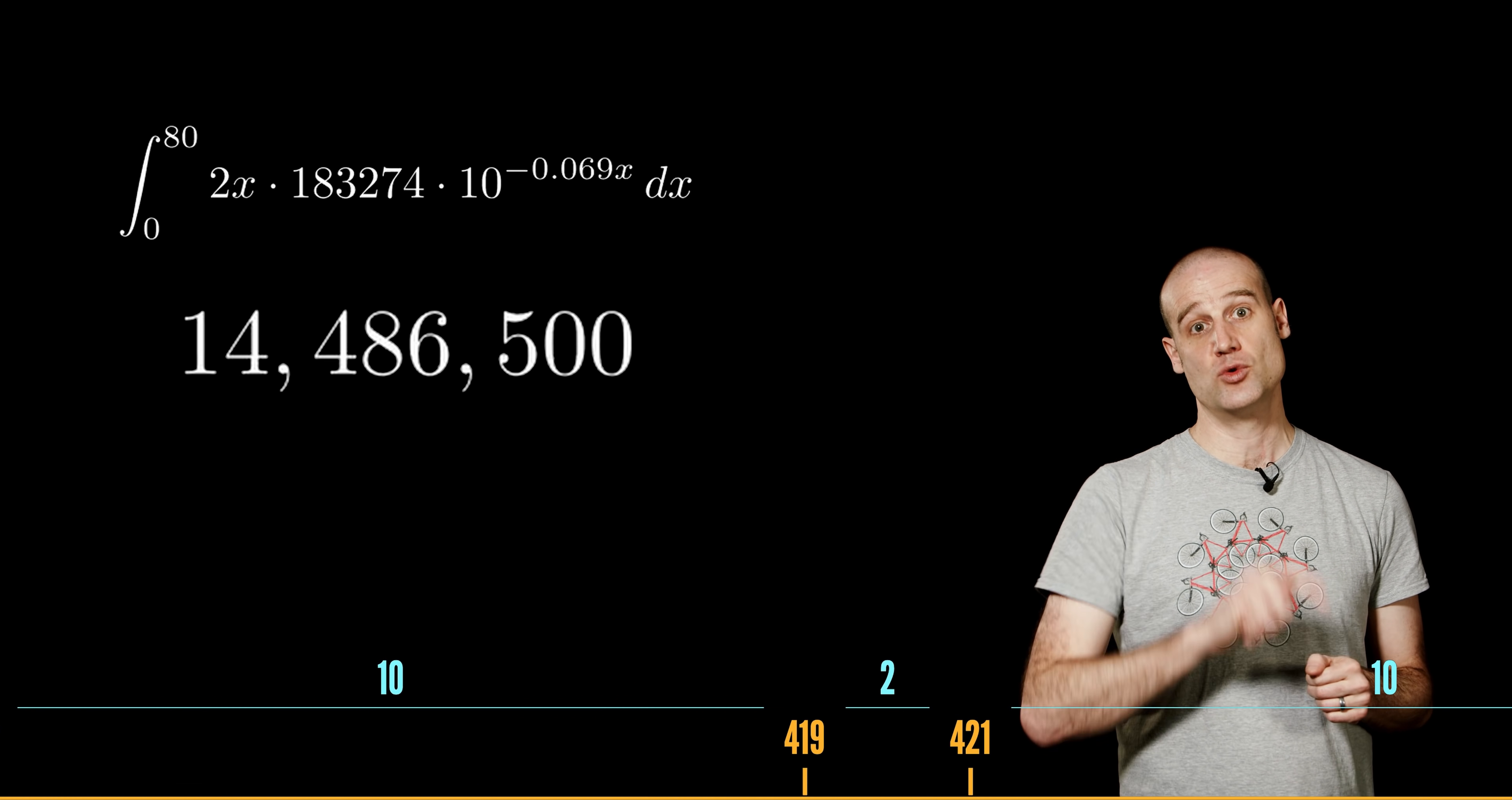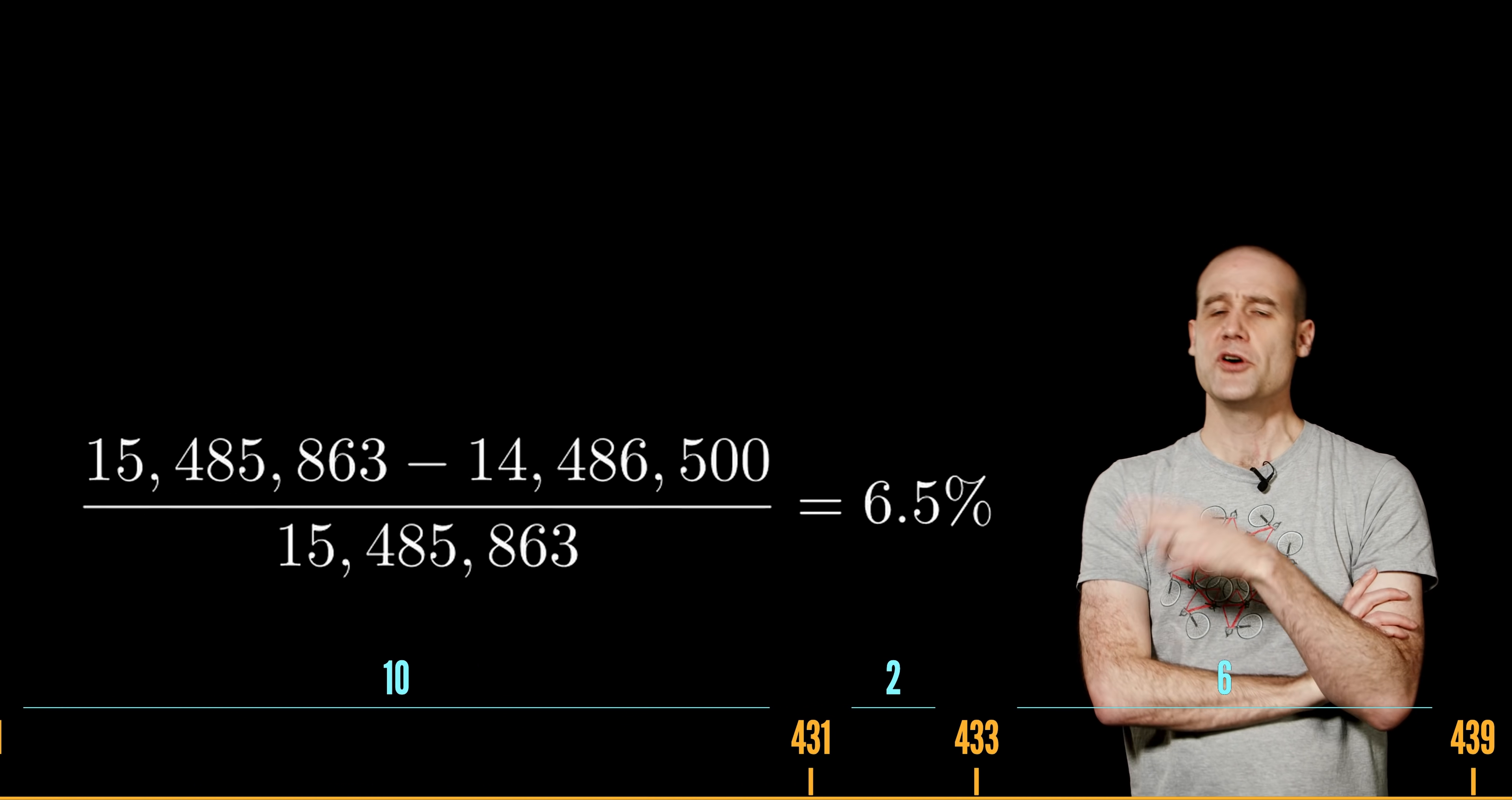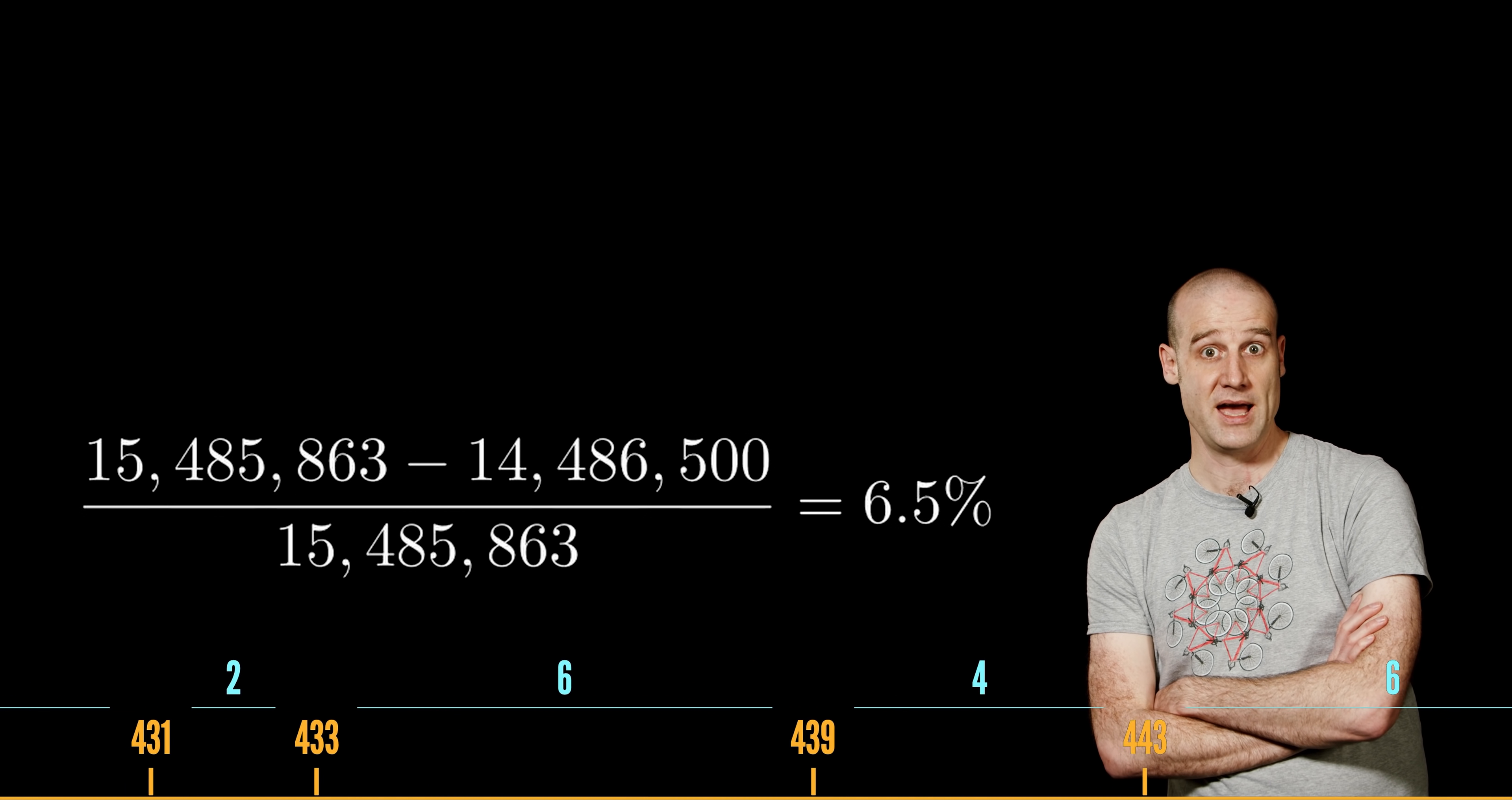Turns out the actual 1 millionth prime is 15,485,863, which you might think we're not close. That is close. First of all, it's less than a million. Secondly, we're off by less than 6.5%. That's not a bad error.